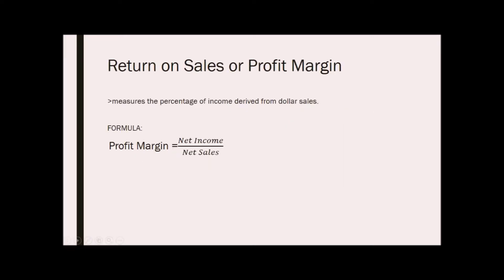Return on sales, or profit margin, measures the percentage of income derived from dollar sales. Net profit margin is the percentage of revenue remaining after all operating expenses, interest, taxes, and preferred stock dividends have been deducted from a company's total revenue. Shareholders often look at the net profit margin closely because it shows how good a company is at converting revenue into profits available to shareholders.